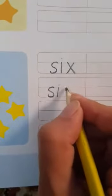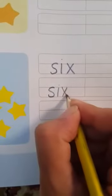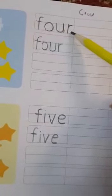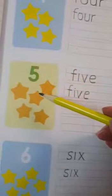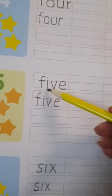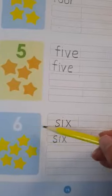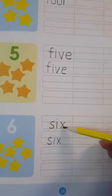So today we learned the spelling of 4. F-O-U-R, four. 5. F-I-V-E, five. 6. S-I-X, six.